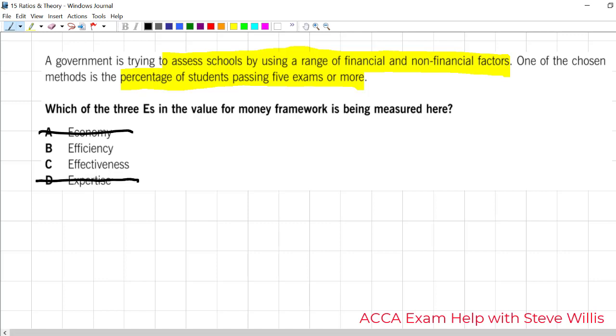Cross out D. Expertise is not in the model. I don't see the word per. It's not a compound metric. I don't see anything about outputs to inputs. What I do see, it's most closely related to the quality of education. So, I'm going with effectiveness as the best answer there. Answer is C.